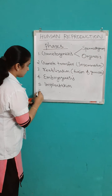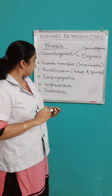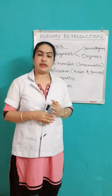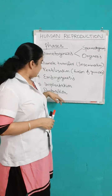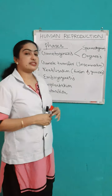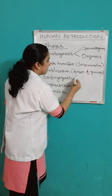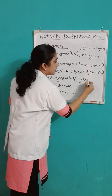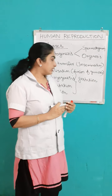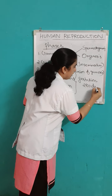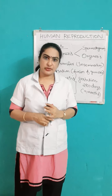The next phase is parturition. After the fully formed embryo is expelled from the female body, that is known as parturition. There is a period from the formation of the zygote till parturition, and that period is known as the gestation period. We can also call this the pregnancy period, and it lasts for 280 days, or 9 months.